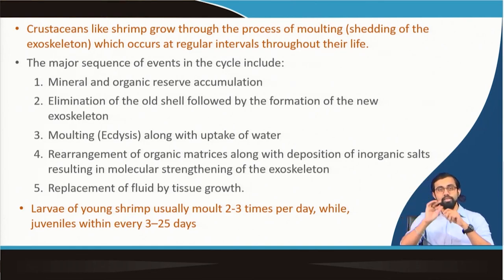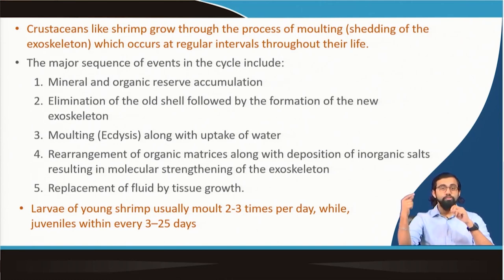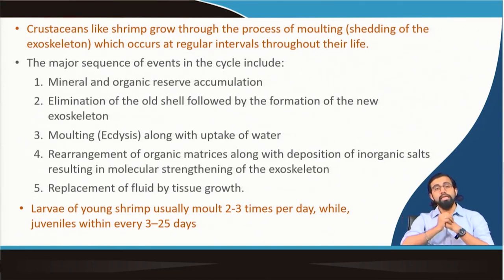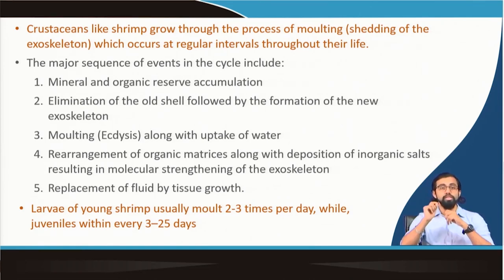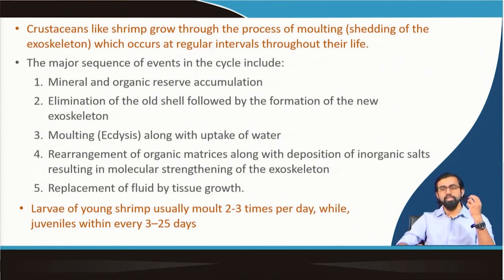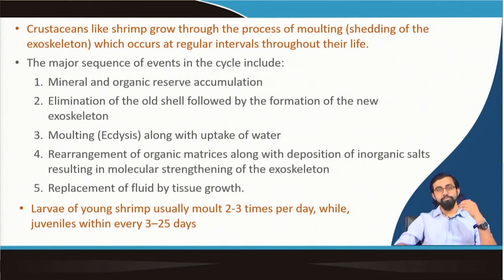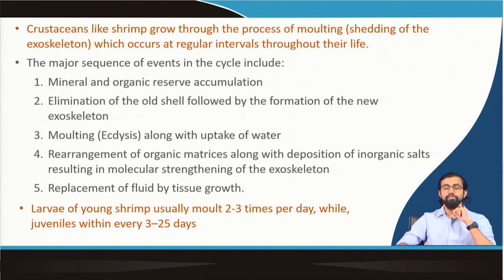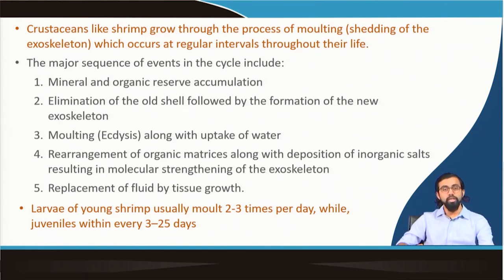The major sequence of events in the molting cycle involves mineral and organic reserve accumulation, elimination of the old shell, formation of the new exoskeleton along with uptake of water, rearrangement of organic matrices, and deposition of inorganic salts resulting in molecular strengthening of the exoskeleton. The exoskeleton is made up of different calcium and magnesium products. The tissues keep growing as the body fluid is replaced very frequently, and this body fluid replacement is the major process for tissue growth.